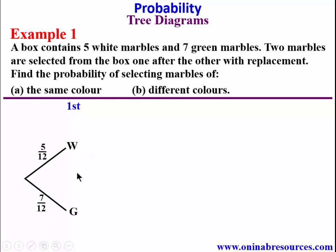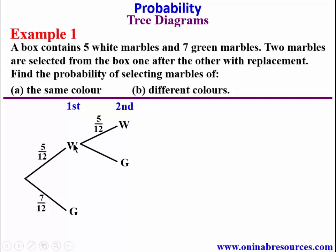Then for the second choice, we look at if white is the first choice. It is possible the second one will also be white, or the second one will be green. Since it is with replacement, we still have 5 white over a total of 12. In the same way, if the first one is white and the second one is green, it will still be 7 over 12. This covers the possibility of first white and second either white or green.